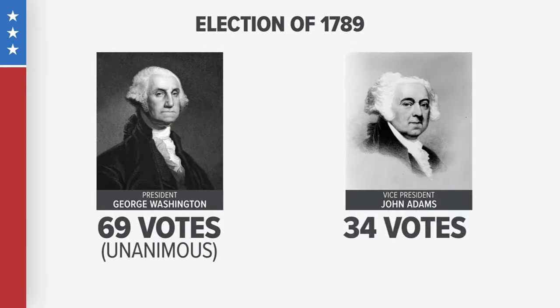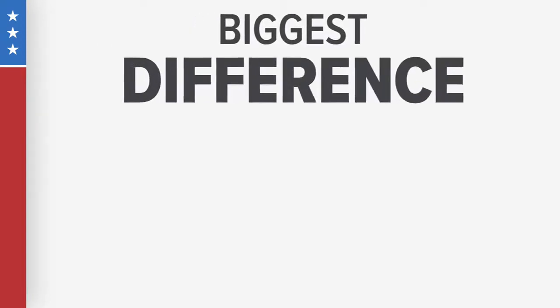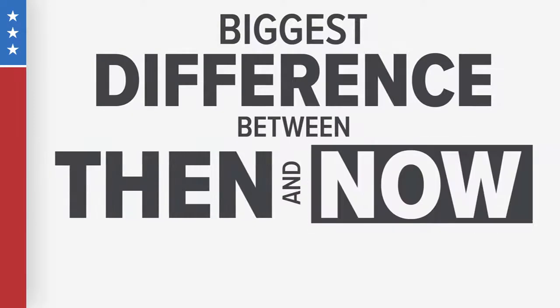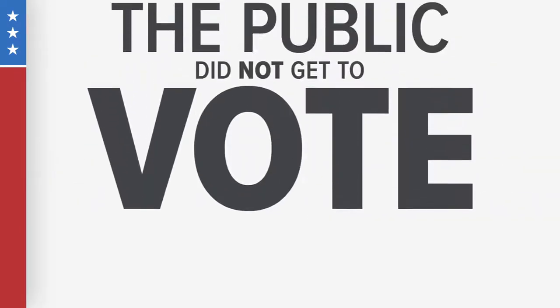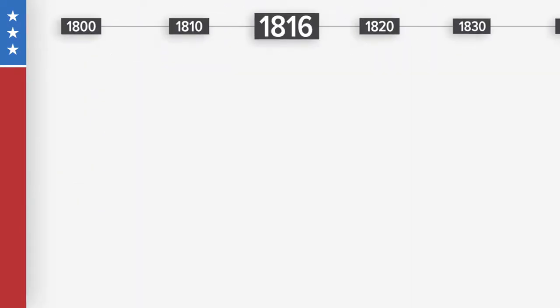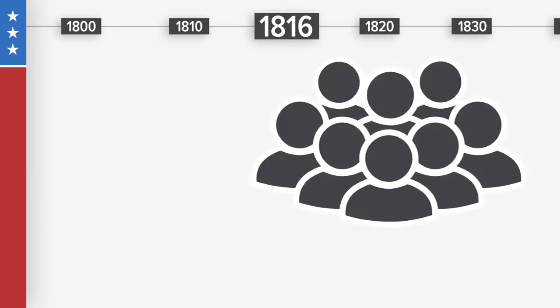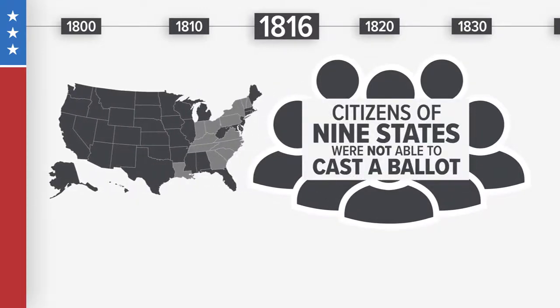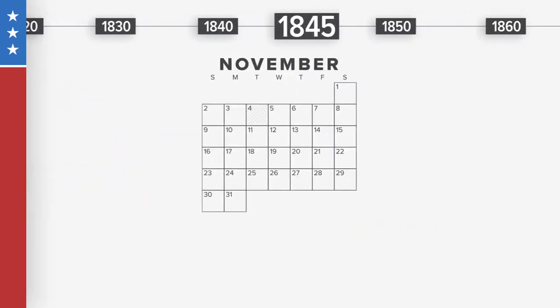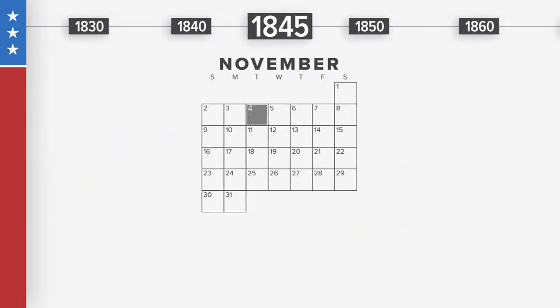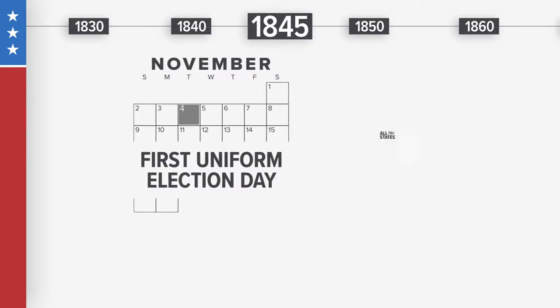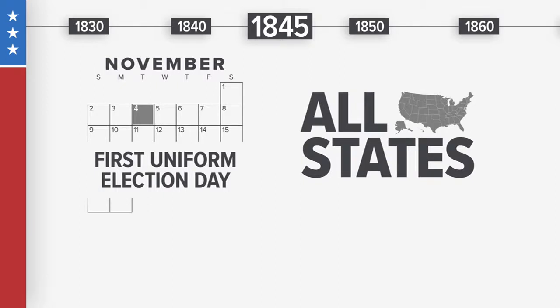Vice President John Adams received 34 of the other votes. Perhaps the biggest difference between then and now, the public did not get to vote. As late as 1816, citizens of nine states were not able to cast a ballot. And it wasn't until November 4, 1845, that the U.S. held its first uniform election day, meaning all states voted on the same day.